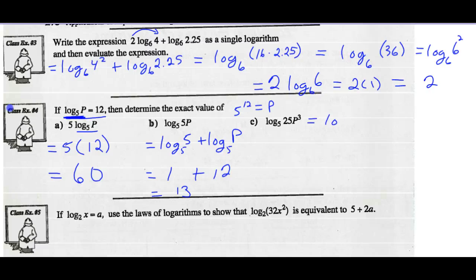And example C, I could rewrite this using the product law. The log of 25 base 5 add the log of P cube base 5. So I can rewrite the log of 25 base 5 as the log of 5 squared base 5. And I can bring the exponent on the argument out in front as a coefficient and make this 3 times the log of P base 5.